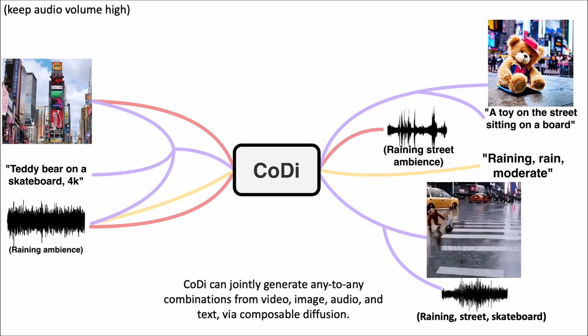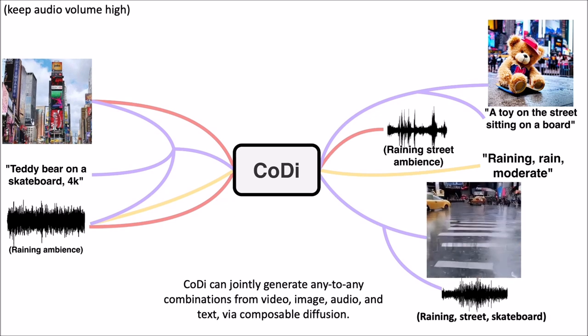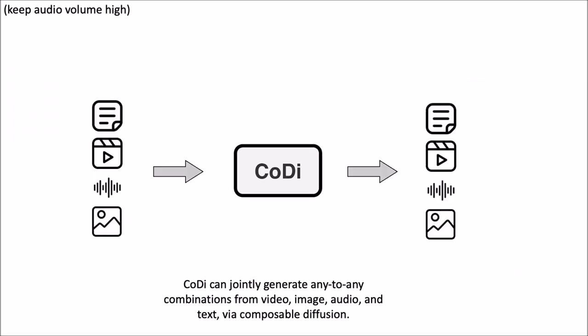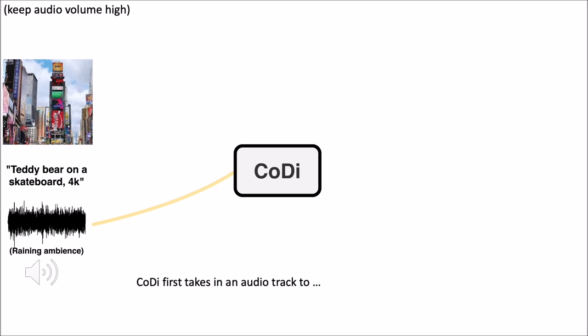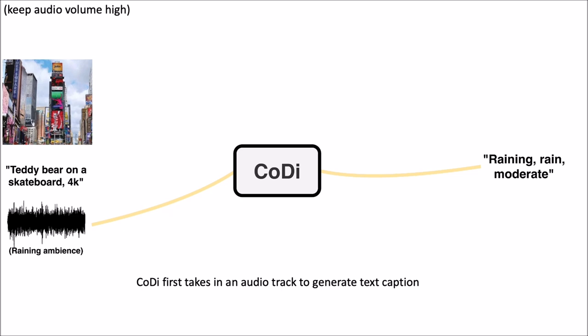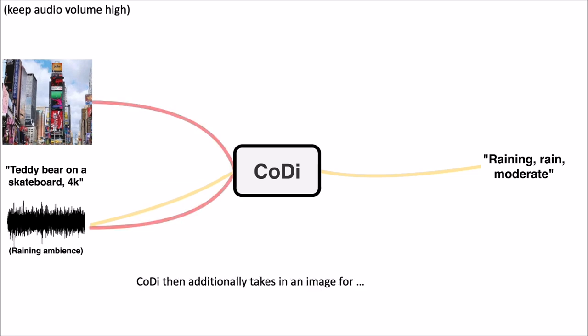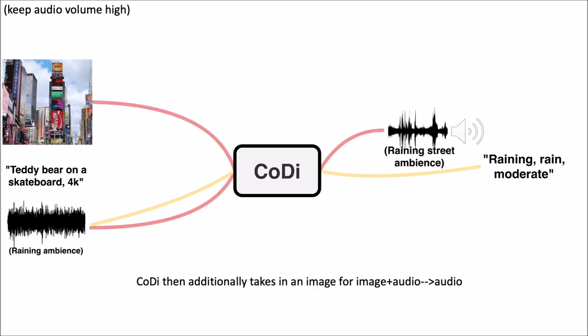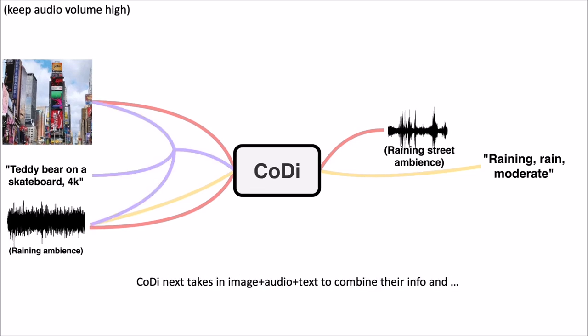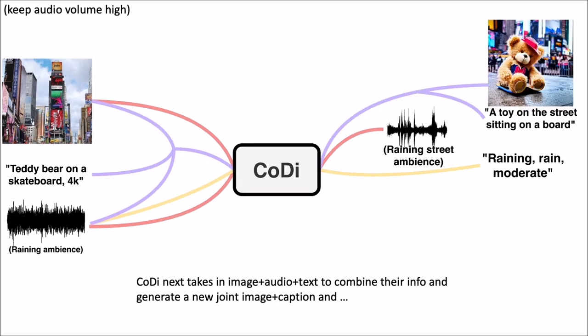Kodi achieves this by employing a different type of structure where each layer is in a hierarchy and corresponds to different domains. At each level, the different types of diffusion models refine the input data to produce higher-quality samples. By stacking multiple diffusion models, Kodi enables the generation of diverse and coherent samples across different domains.